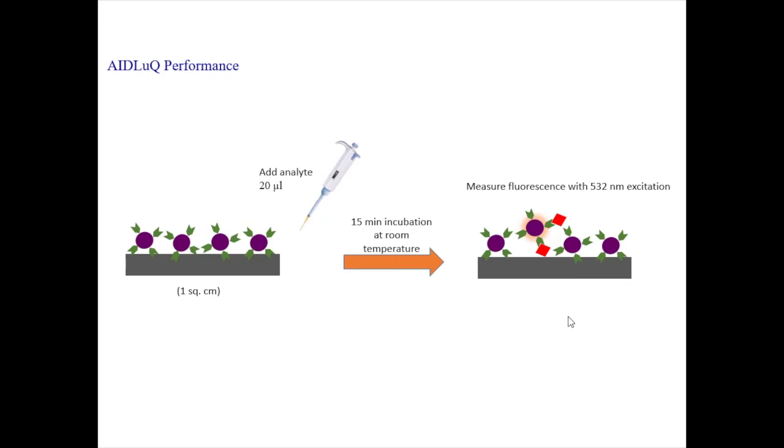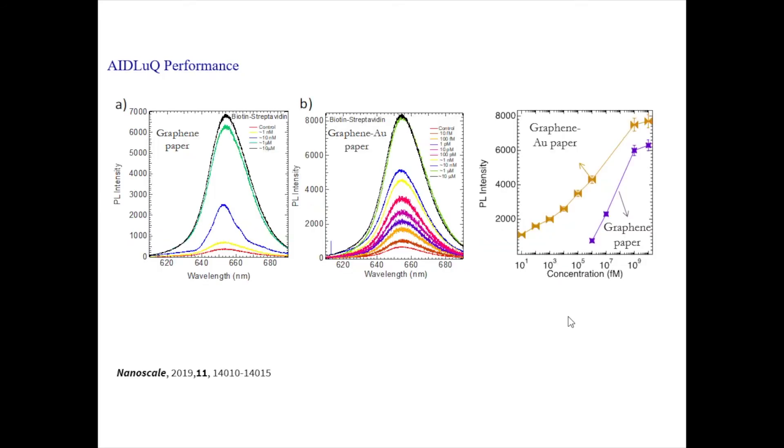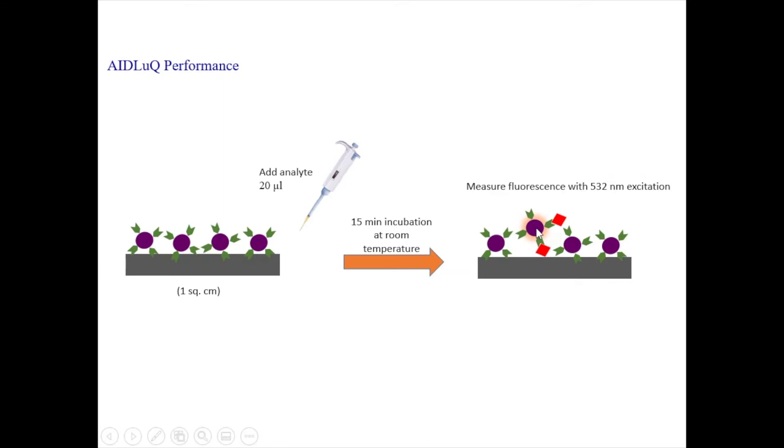And that's what we had done with starting with biotin streptavidin pair. So this was just for testing. So streptavidin was attached to cadmium selenide and biotin was used as the analyte. And biotin streptavidin have the best non-specific interaction known. So when biotin attaches to streptavidin, then the quantum dot is lifted up above the surface. So you begin to see the fluorescence again. So as you add more and more of biotin, you get more and more of fluorescence because more and more number of quantum dots are lifted above the graphene surface.